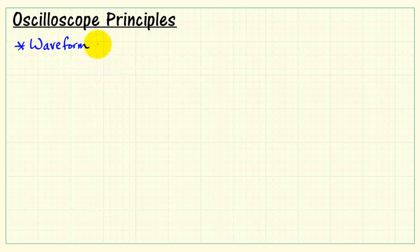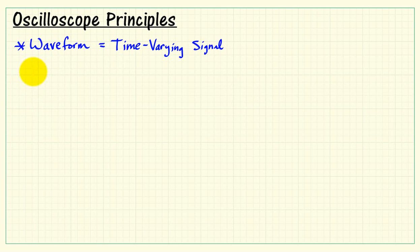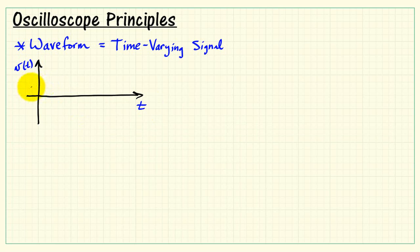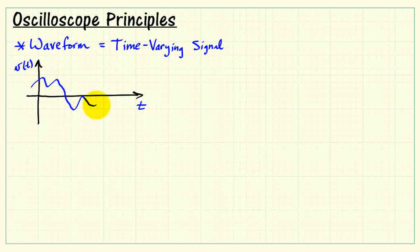Let's consider some basic principles associated with an oscilloscope. Oscilloscopes give us a great tool to visualize a waveform, which is a time-varying signal, say a voltage V(t), where t represents time, and a time-varying signal might look something like this.